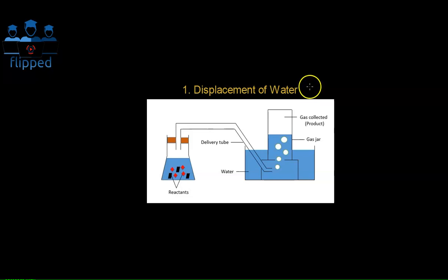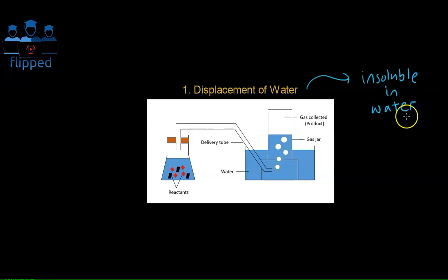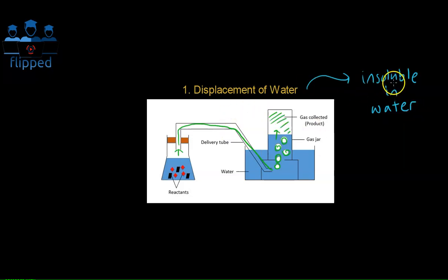If you watched our previous video, you will know that for this method, the gas collected has to be insoluble in water — that means it cannot be dissolved in water. Let's look at the setup. The reactants are here and when they react, they produce a gaseous product. This gaseous product will travel along the delivery tube and go into the water, but it does not dissolve, so it bubbles out as little bubbles. When they reach the top, they come out as gases and occupy this chamber here. So this method is for gases that are insoluble in water.